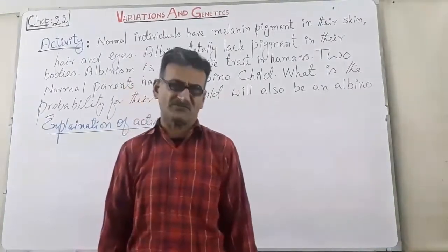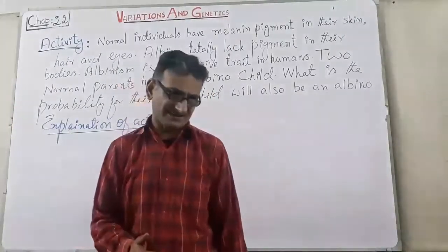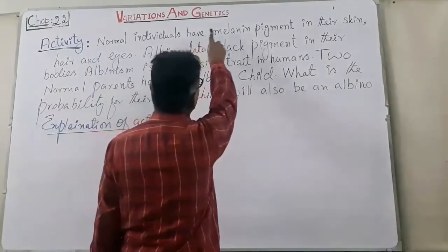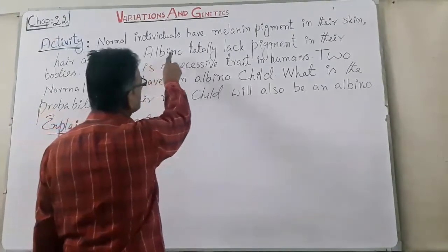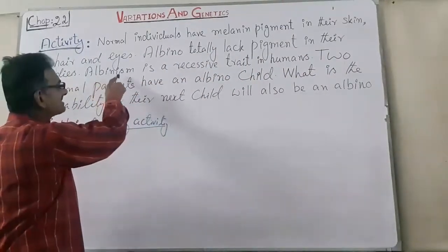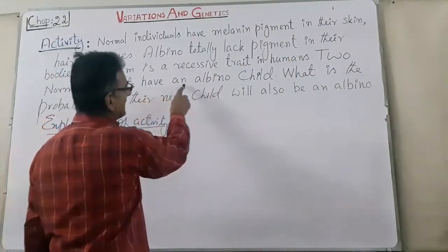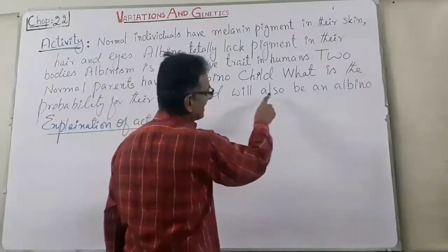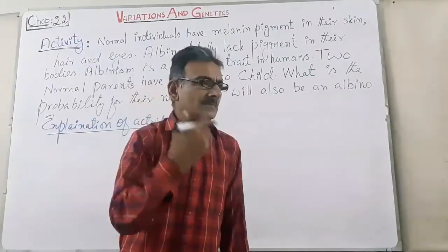In the name of Allah the gracious the most merciful. Good morning students. Today we will solve an activity. The statement of the activity is: normal individuals have melanin pigment in their skin, hair, and eyes. Albinism is a recessive trait in humans. Two normal parents have an albino child. What is the probability that their next child will also be an albino?